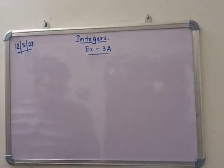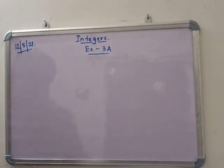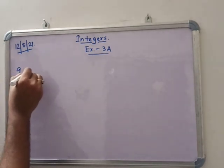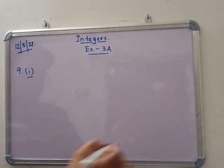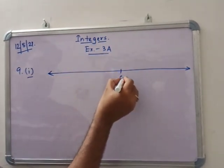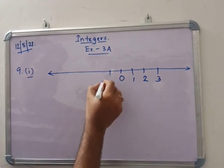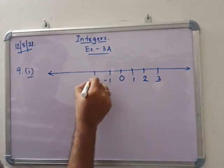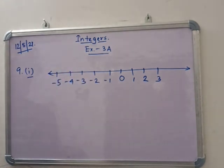In number 9, represent each of the following on the number line. In 9.1, all integers from minus 5 to 3. So on the number line: 0, 1, 2, 3 on the right side, and minus 1, minus 2, minus 3, minus 4, minus 5 on the left side. This is the representation on the number line.